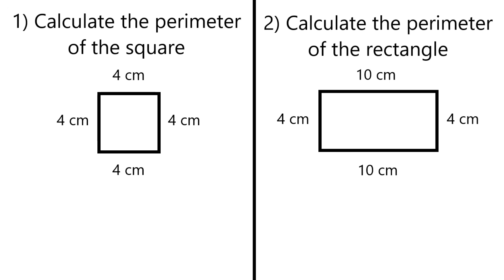So how do you calculate the perimeter of a square or rectangle? Well it's pretty easy — you just need to add up the lengths of the sides. I visualize it as a fence, so let's pretend we've got a square fence and a rectangular fence. We just need to add up the length of all the sides and that's going to be the perimeter.